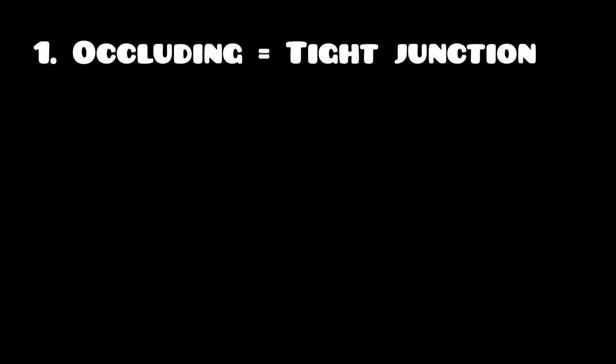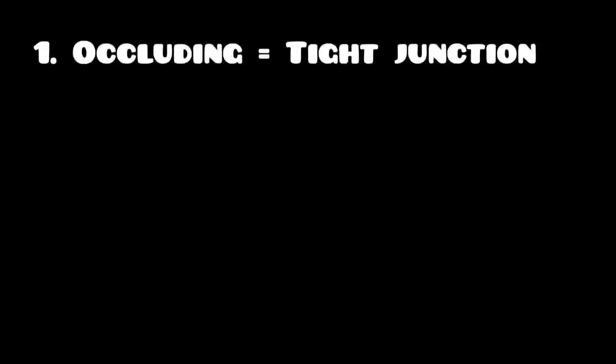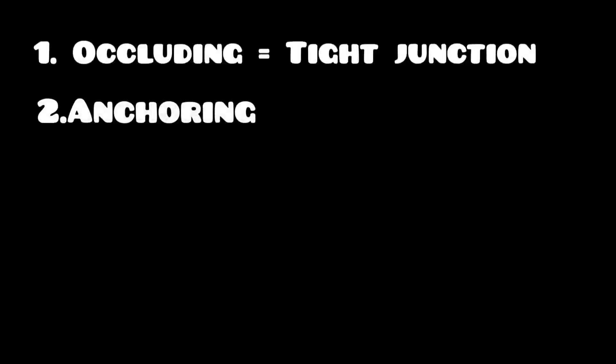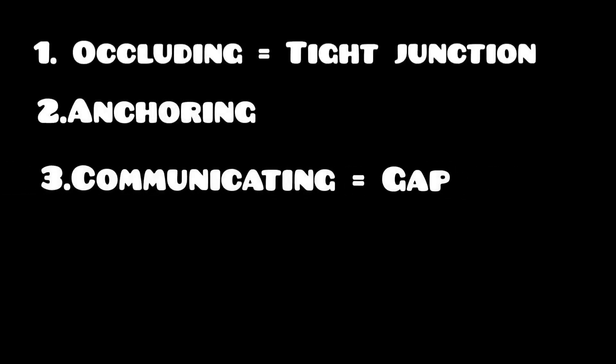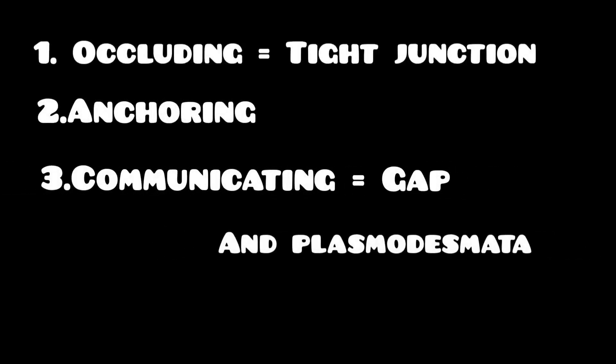To summarize, we have learned about three types of cell junctions: the occluding junction, which includes the tight junction; the anchoring junction; and the communicating junction, which includes gap junctions and plasmodesmata.